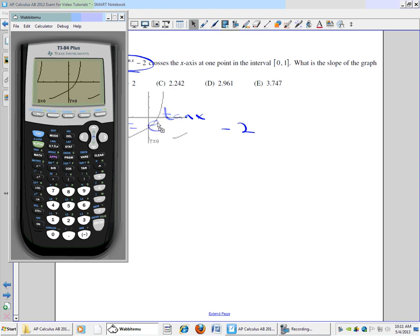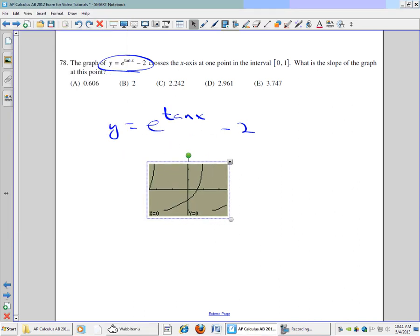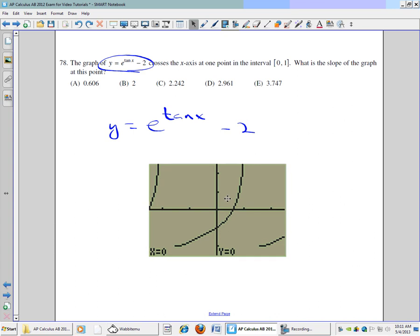Let's go ahead and pull that graph off to the screen. Now it says the graph of y equals e to the tangent of x minus 2 crosses the x-axis at one point in the interval from 0 to 1.